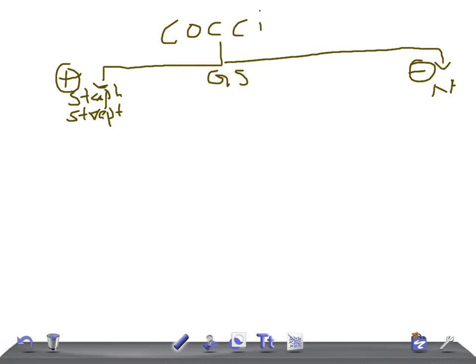There are two Neisseria organisms: Neisseria meningitidis and Neisseria gonorrhoeae. These are differentiated by the maltose fermentation test. If maltose fermentation is positive, it's Neisseria meningitidis. If negative, it's Neisseria gonorrhoeae. So gram negative cocci belong to the Neisseria family, while gram positive cocci include Staph and Strept species.